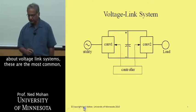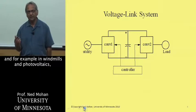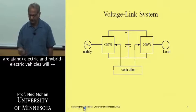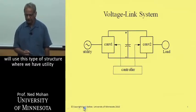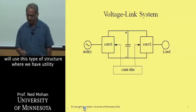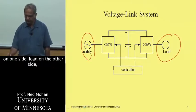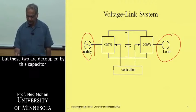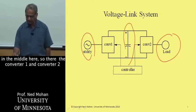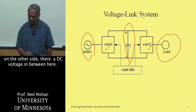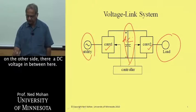So let's talk about voltage link systems. These are the most common, and for example, in windmills and photovoltaic or electric and hybrid electric vehicles, we use this type of structure where we have utility on one side, load on the other side, but these two are decoupled by this capacitor in the middle here. So there's a converter one and converter two on the other side, and there's a DC voltage in between here.